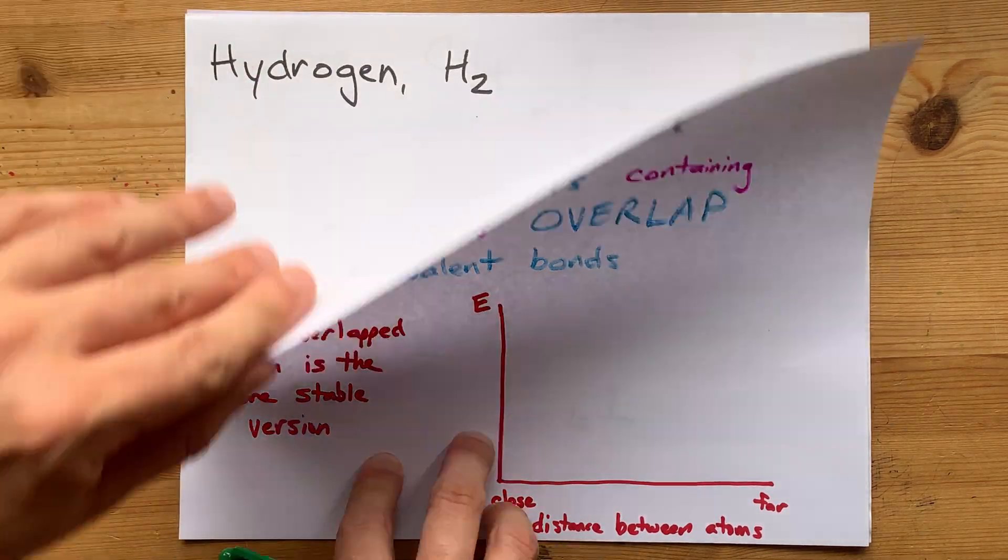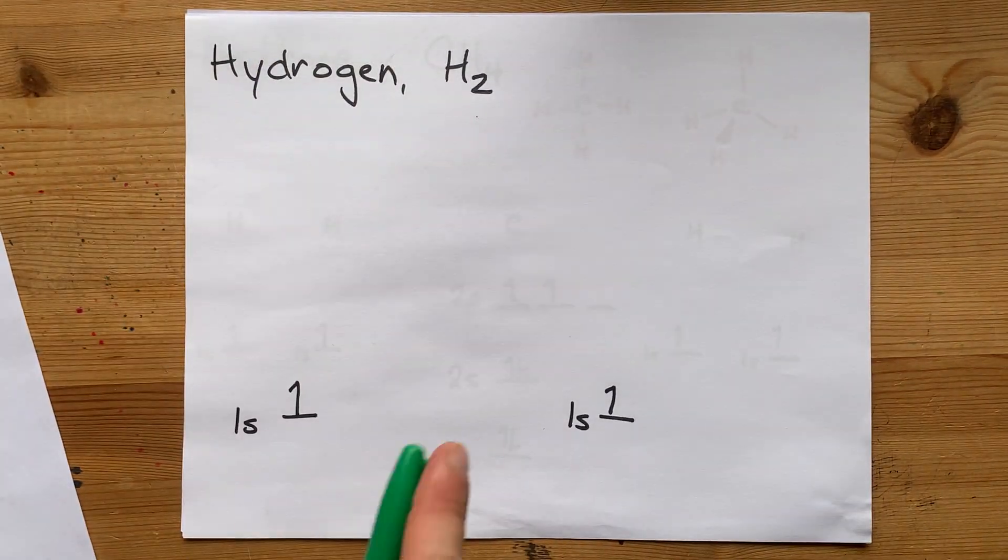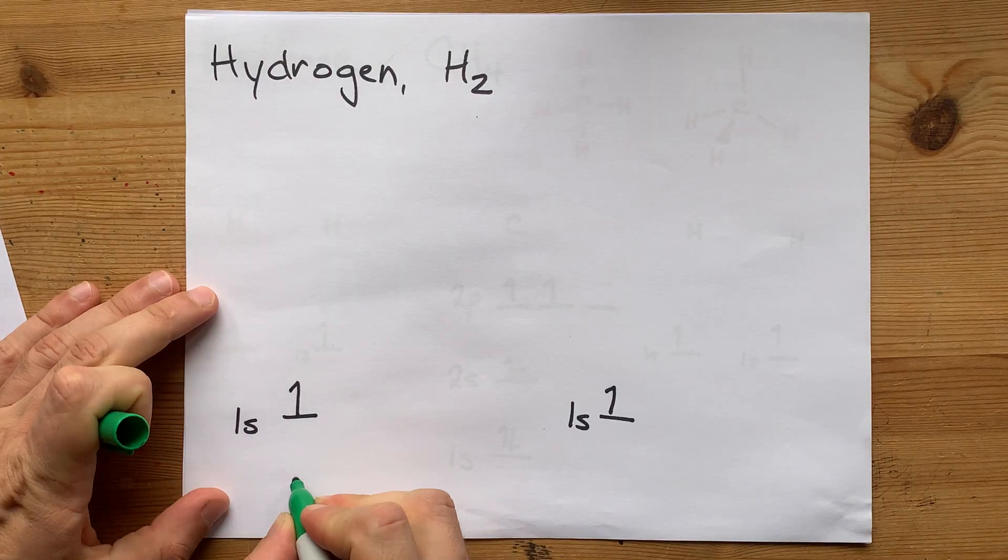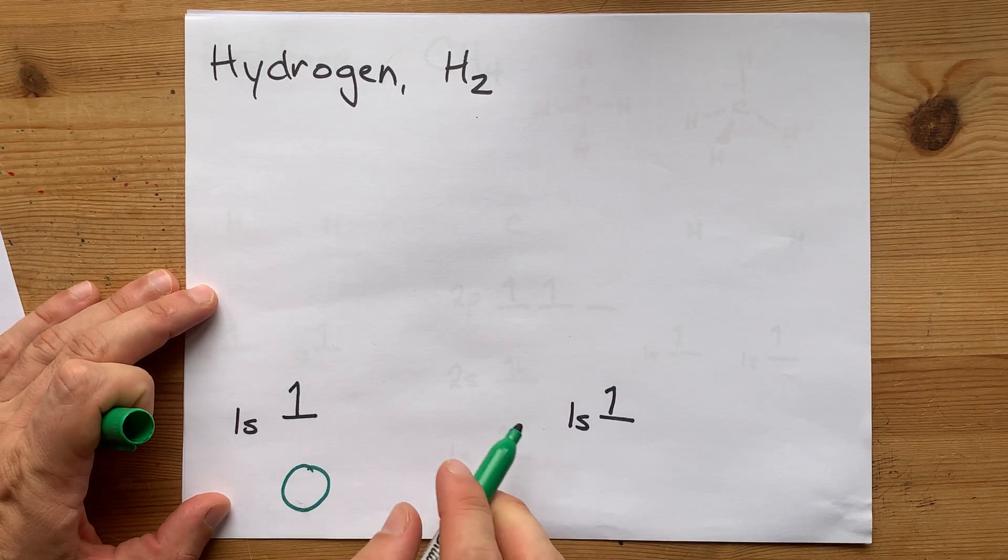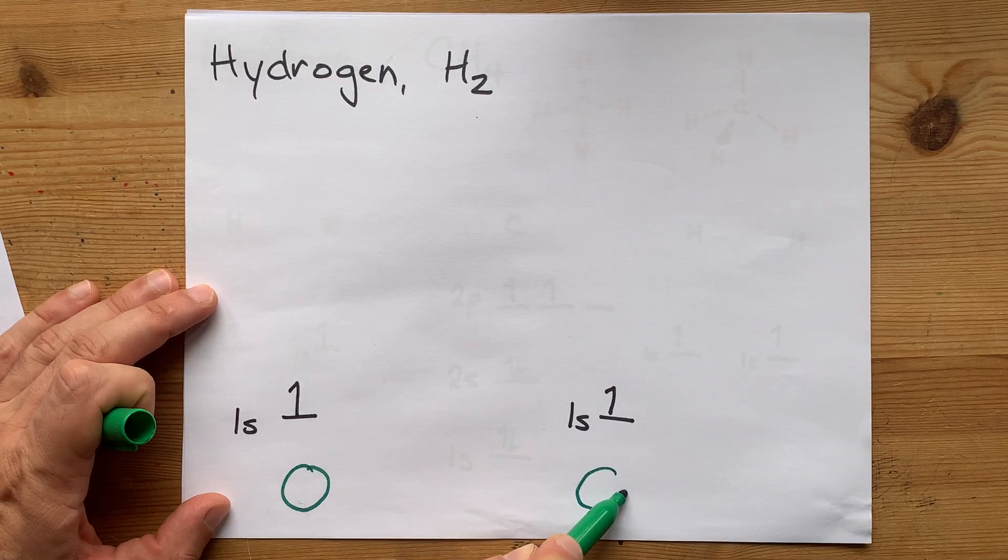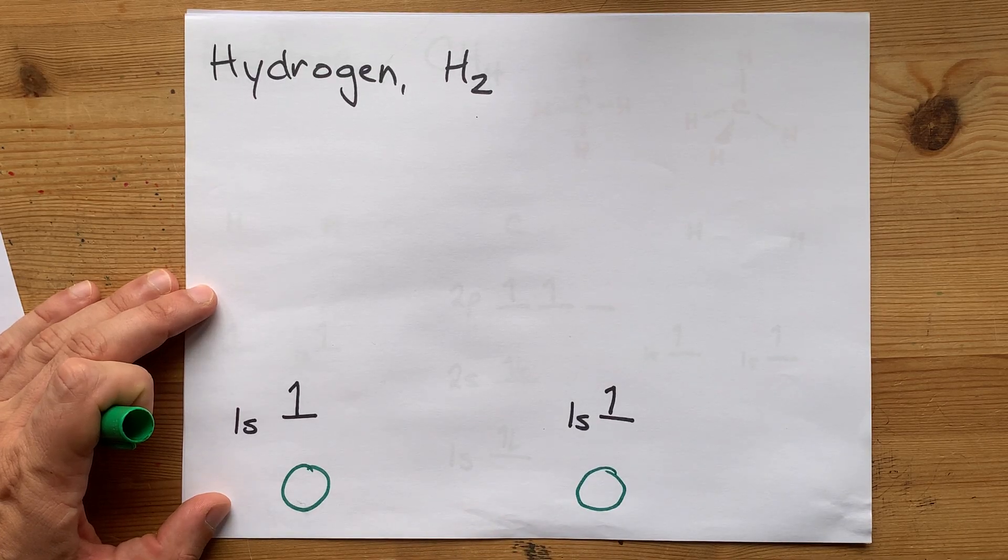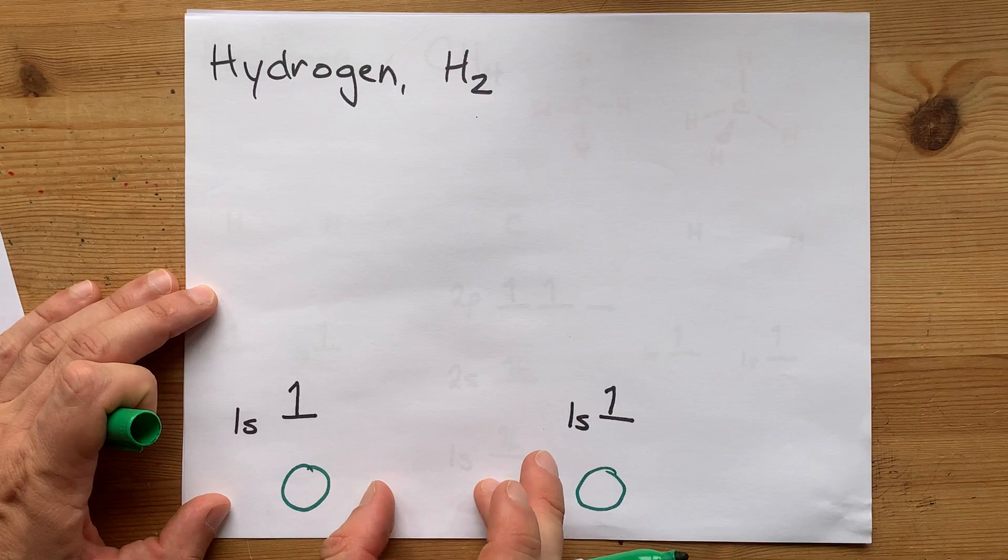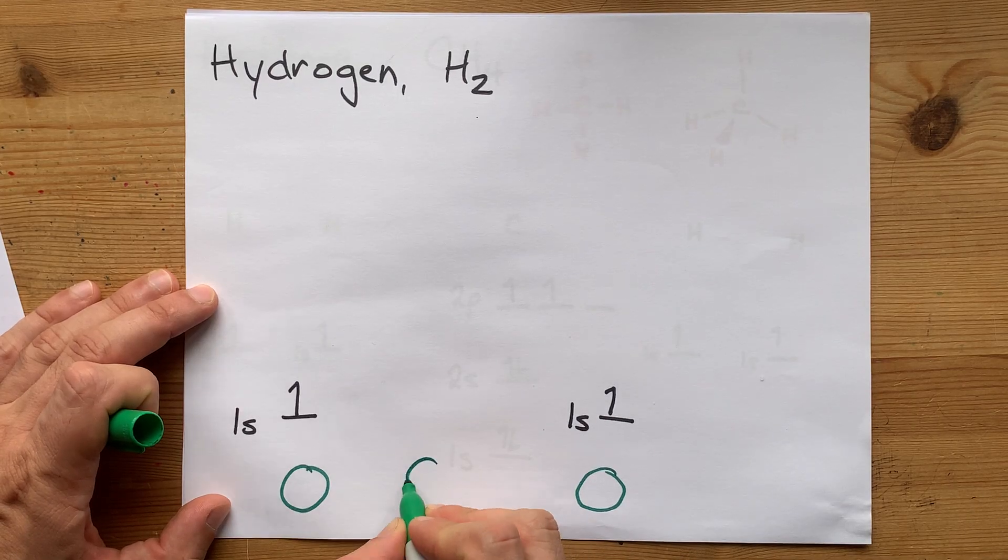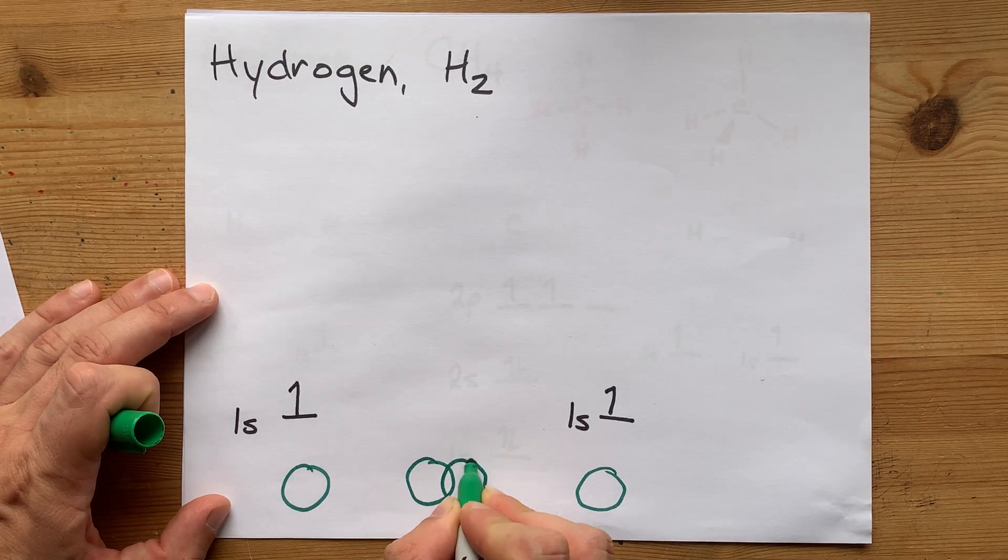For example, in the molecule H2, you'll start with hydrogen's 1s orbital, which is a sphere, and another hydrogen's 1s orbital, which is a sphere. And if they come close enough together, the two will overlap with each other.